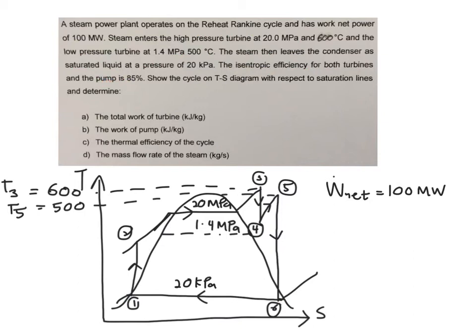The problem also gives you the isentropic efficiency for both your turbines and your pump. When you have isentropic efficiency, it means your devices are not working 100% — there are losses due to irreversibility. The isentropic efficiency of the high pressure turbine, the low pressure turbine, and the pump are all equal to 85%.